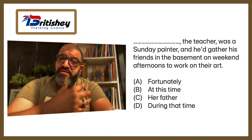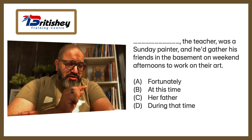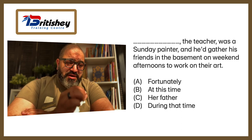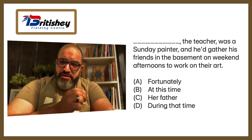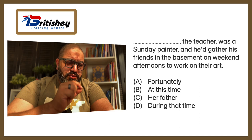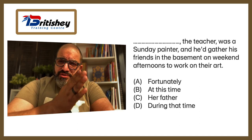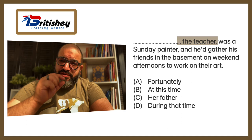But how do we know? Let's see this through some questions. Question number one — it's a kind of an MCQ question. The teacher was a Sunday painter and he'd gather his friends in the basement on weekend afternoons to work on their art. When you look at 'the teacher', you notice that there is a comma before it and a comma after it. This is a clear sign that 'the teacher' is an appositive.